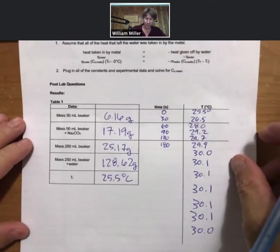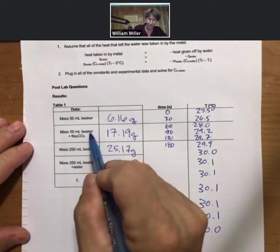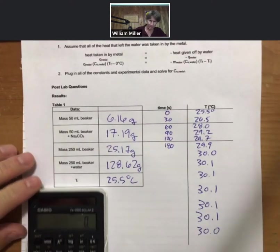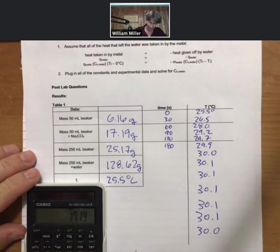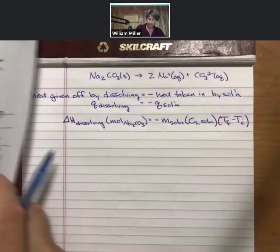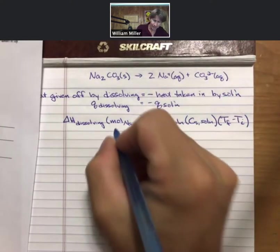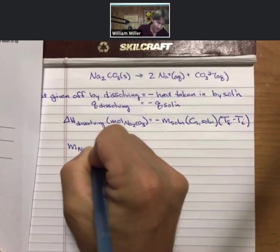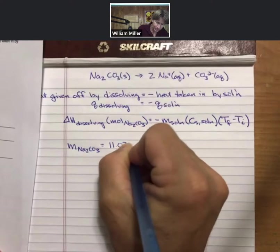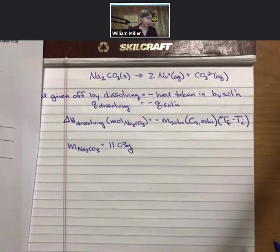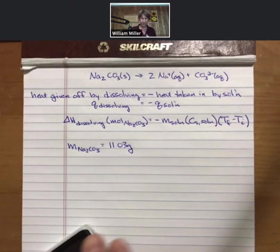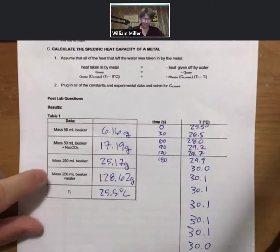Looking at my data, the mass of sodium carbonate is the difference between two measured values: 17.19 minus 6.16 gives 11.03 grams. That's my mass of sodium carbonate. I need moles, but I have mass right now, so I'll convert.